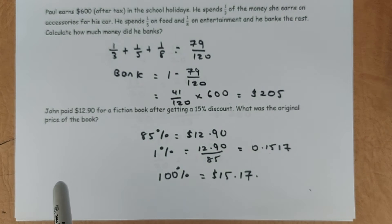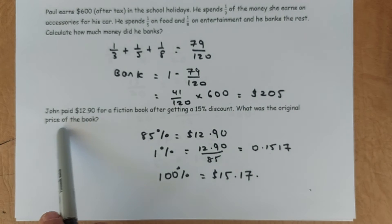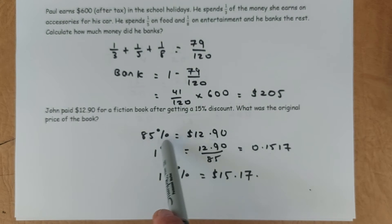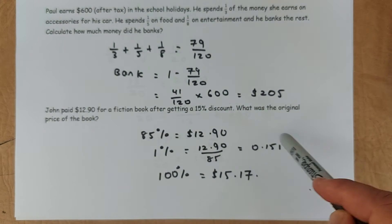This question always appears and most people get it wrong. So John paid $12.90 for a fiction book after getting a 15% discount. What was the original price of the book? So he bought at 85% because it was a 15% discount. So 85% is $12.90. So you find for 1%. 1% is 12.90 divided by 85. That comes up with 0.1517.